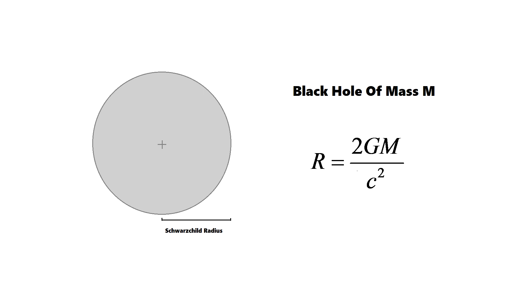There is a magic distance from the center called the Schwarzschild radius where things start to go weird. You can calculate it by multiplying the mass of the object by 2, then multiplying by the gravitational constant, and dividing by the speed of light squared. If you use solar masses, it's simpler: multiply the mass in solar masses by about 2.95 kilometers, and that gives you the magic radius.